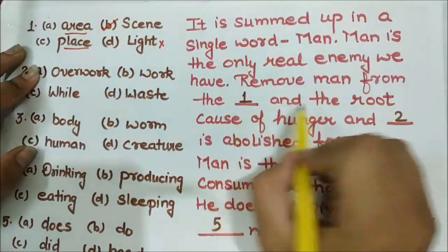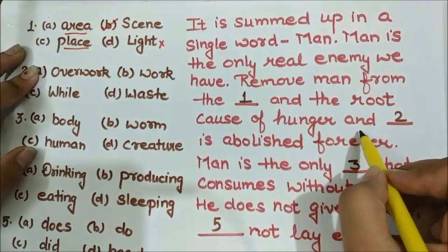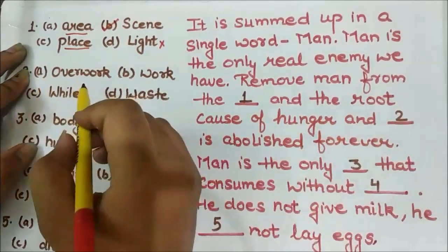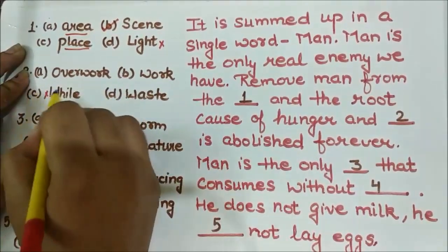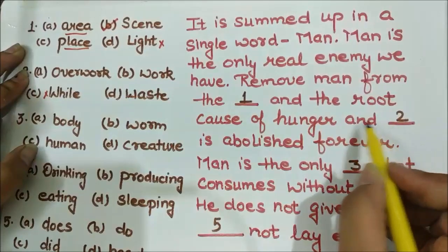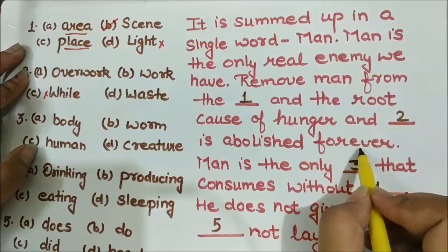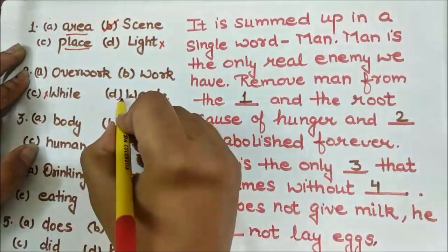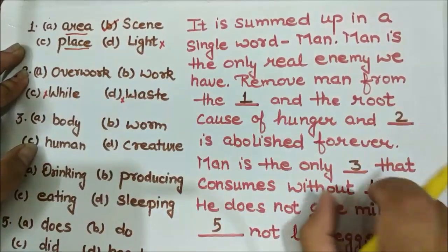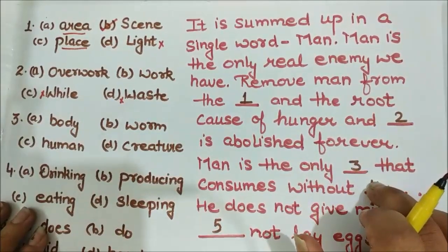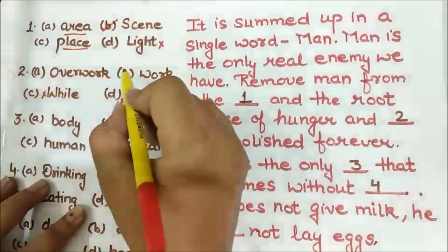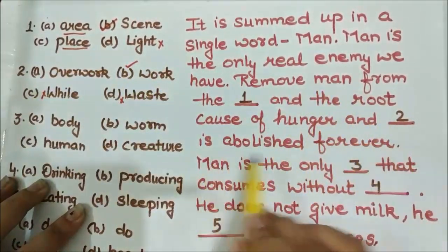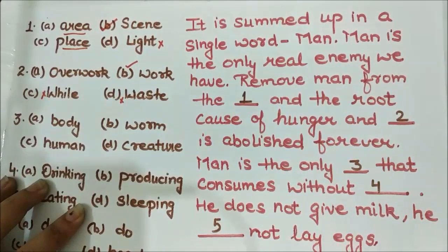The second blank: 'the root cause of hunger and ___ is abolished forever.' The options are overwork, work, while, and waste. 'While' has no connection here. If man is not there, 'waste' cannot be abolished — because where there is man, there is waste. So 'work' is the right option. Hunger and work is abolished forever, because all work — producing crops, animals giving milk, laying eggs — is all about man and his hunger.